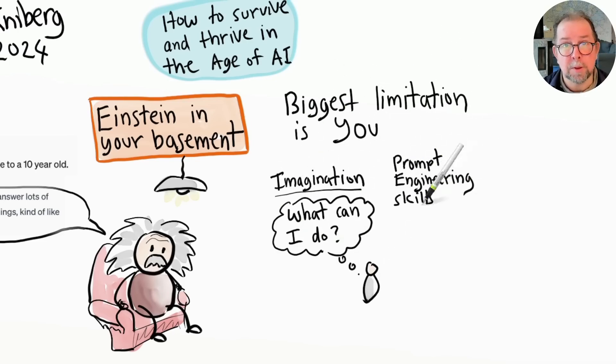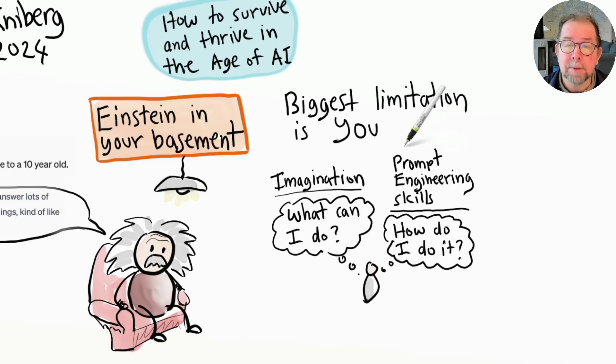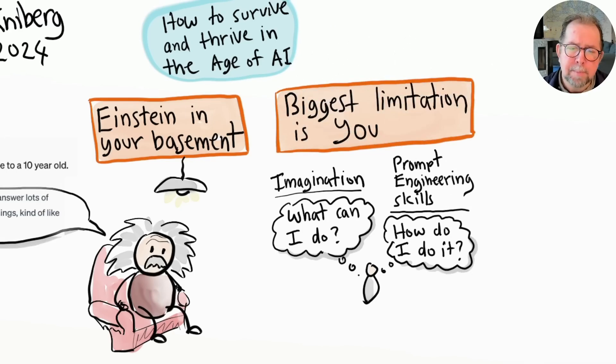This skill is known as prompt engineering, and in the age of AI this is as essential as reading and writing. Most people vastly underestimate what this Einstein in your basement can do. It's like going to the real Einstein and asking him to proofread a high school report, or hiring a world-class five-star chef and having him chop onions.